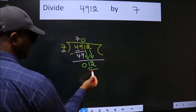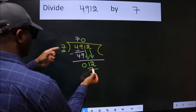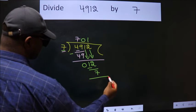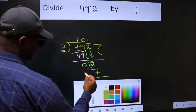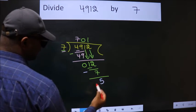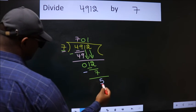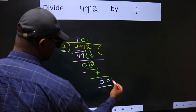So 12. A number close to 12 in 7 table is 7 once, 7. Now we subtract. We get 5. No more numbers to bring down. So we stop here. This is our remainder. This is our quotient.